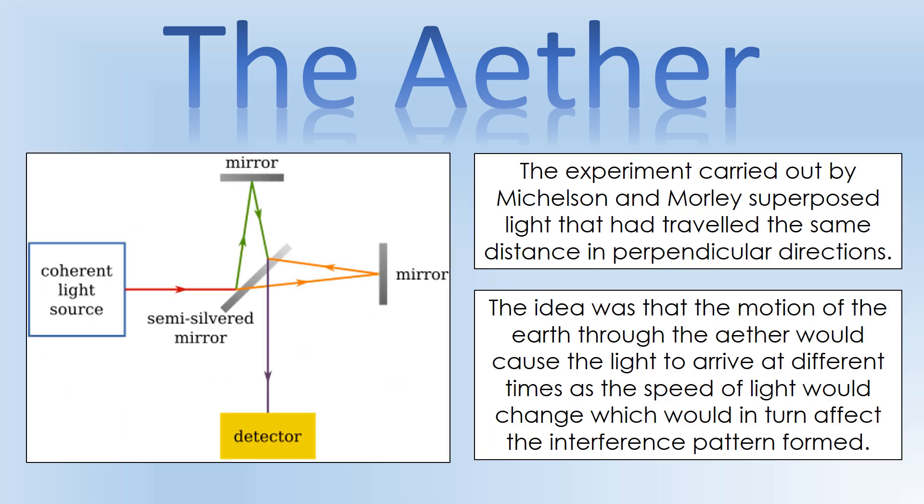They came up with an experiment that would allow us to test whether this is actually true. Does the speed of light change depending on the motion of the earth? So what they've done is they've set up a system where we get light to travel in two perpendicular directions. The idea being that they will be moving at different angles to the ether, so light should travel at different speeds in those perpendicular directions. If we look at the interference pattern made when we superpose those two light waves together, it should indicate that they've taken different times to get there. The interference pattern should show they've traveled at different speeds.